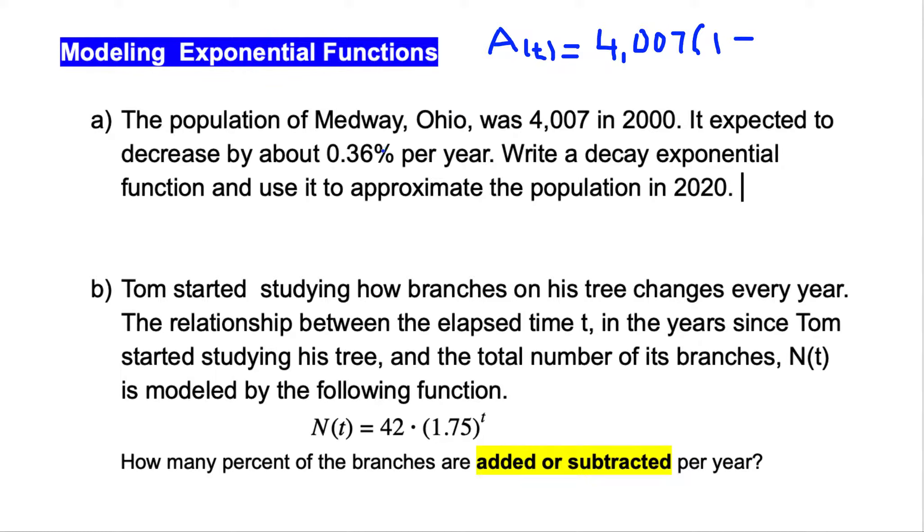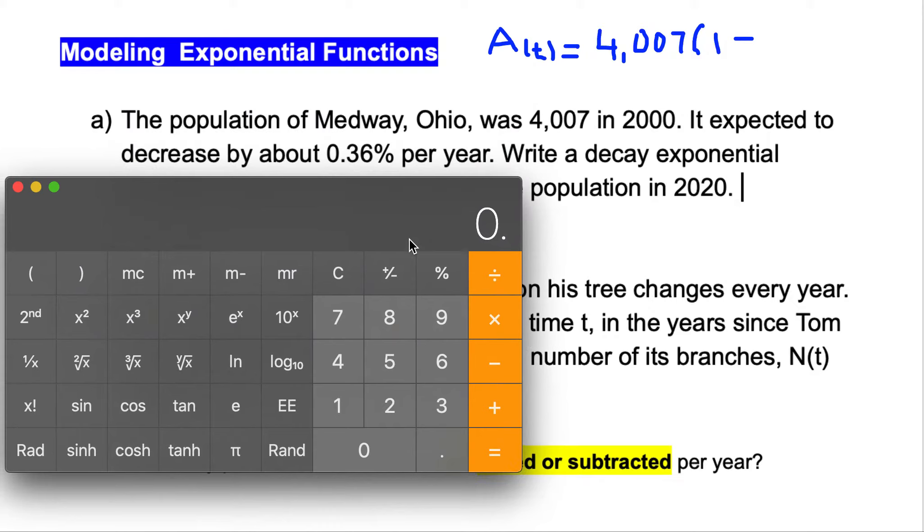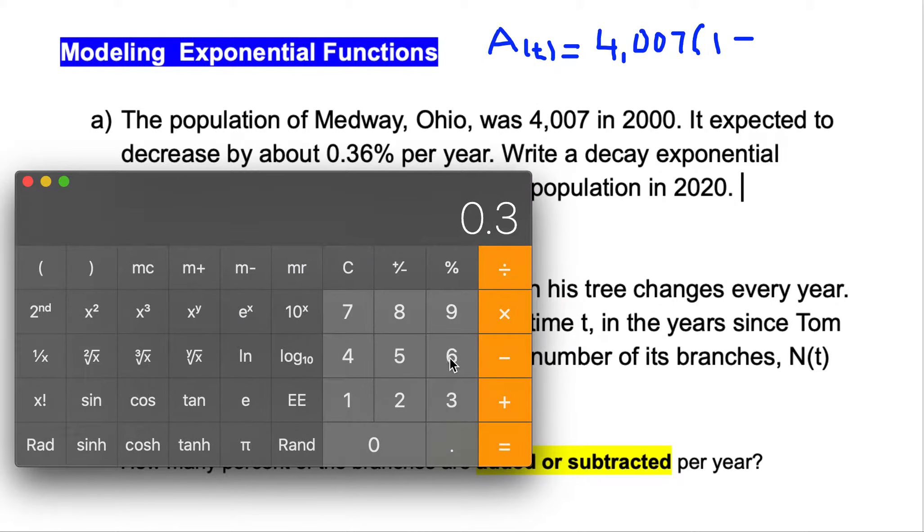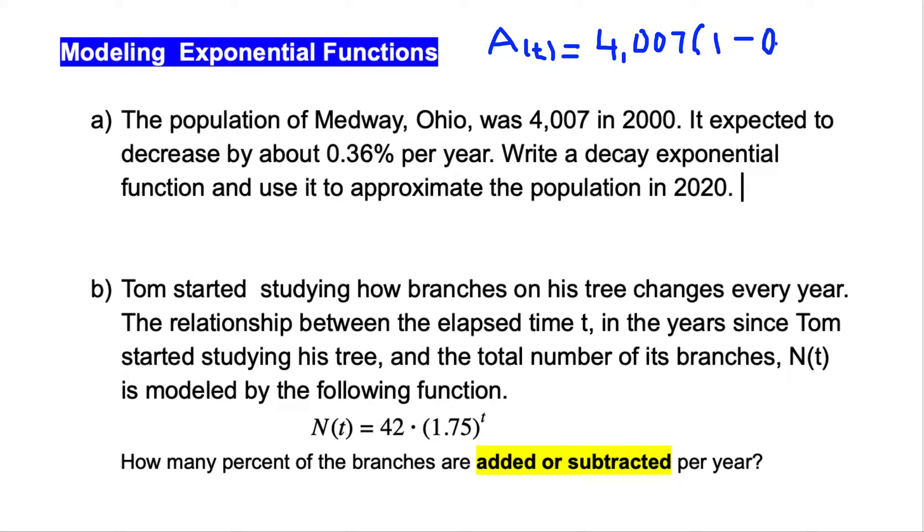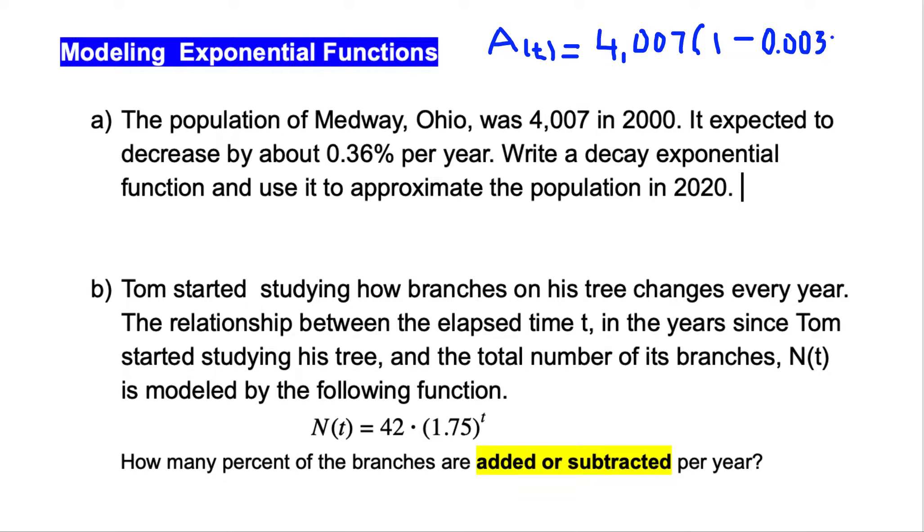R here is 0.36%. If we want to write this in numerical value, we have to divide. This is 0.36 divided by 100, and we get the numerical value, which is 0.0036. So it is minus 0.0036.